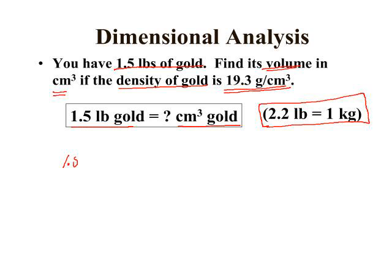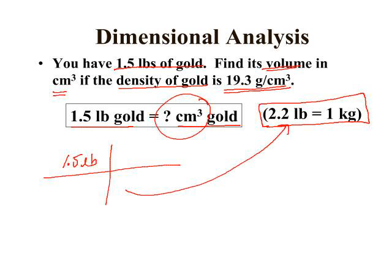So you would start with your 1.5 pounds of gold and then you need to be able to get to volume. So you can see that this conversion factor 2.2 pounds in one kilogram is going to get you to mass.